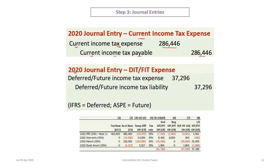The second entry is for the deferred or future income tax expense — IFRS uses 'deferred,' ASPE uses 'future.' The numbers from our completed deferred income tax table form the basis for this journal entry. We debit future income tax expense. If you set up the table correctly with tax basis minus accounting basis, the debits and credits work out properly. With more debits than credits, we have a net $37,296 deferred income tax expense, and we credit a deferred income tax liability of $37,296.